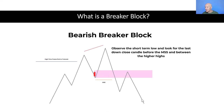The market then trades back up and then trades lower again. You'll notice between these two higher highs, we have this short term low. And so what we're really focusing on is this down close candle in this short term low. Our breaker block is the last down close candle in the short term low, which is between the two higher highs before our market structure shift.